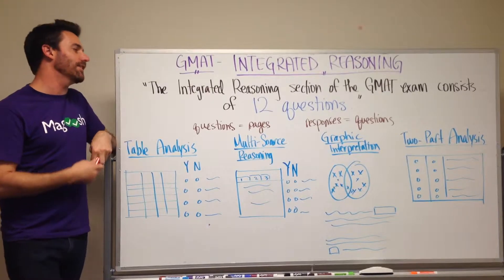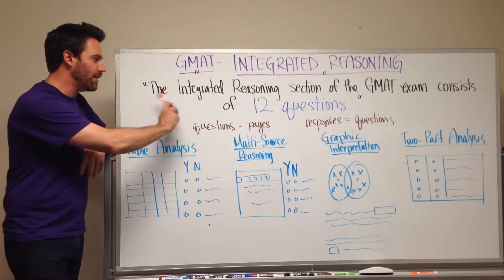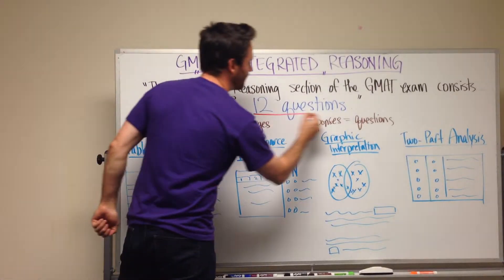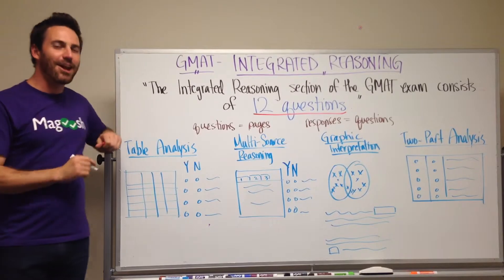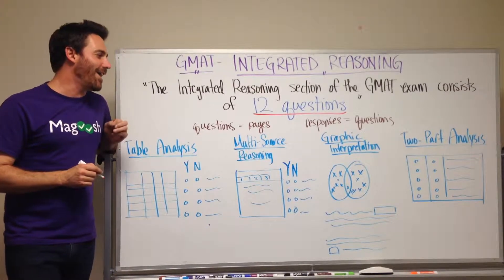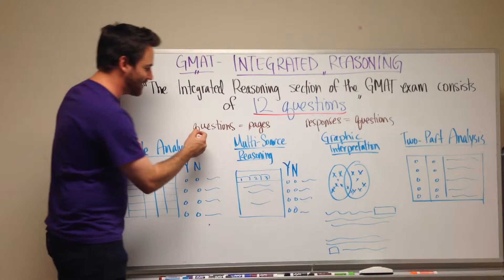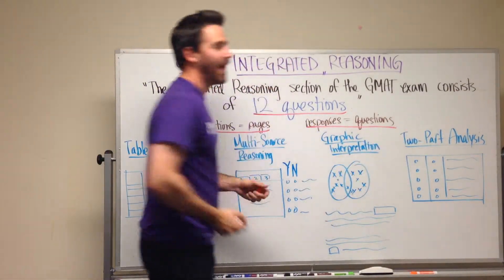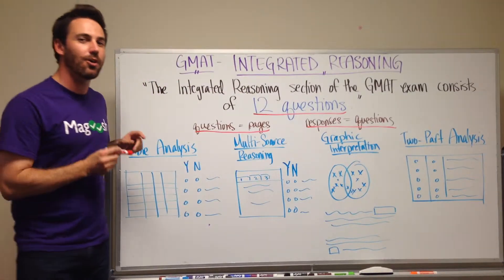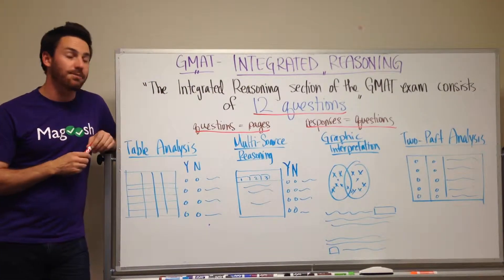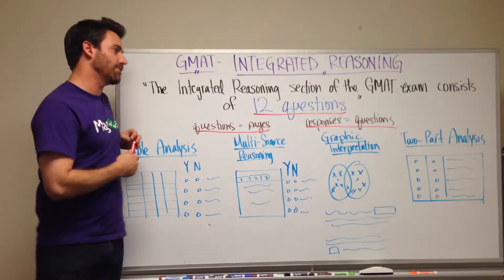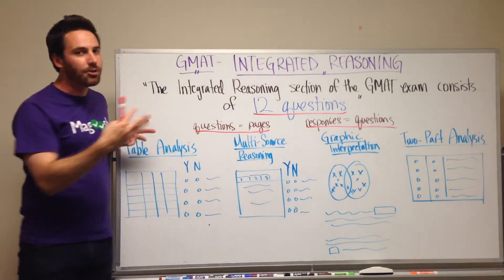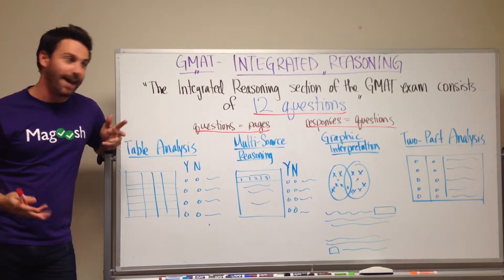In the directions for integrated reasoning, you are told the integrated reasoning section of the GMAT exam consists of 12 questions. Well, that's not actually true. The GMAT tends to think of questions as pages and responses as questions. You can actually go and look on the GMAT website at the directions and you'll see buried below this prompt, there's a bullet point that says there are multiple responses for each question type.